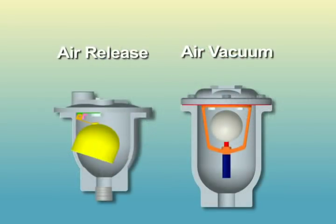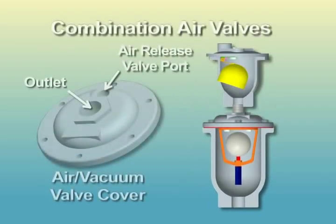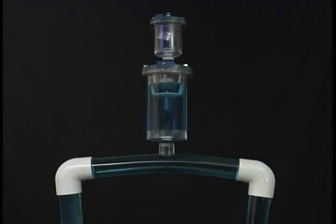Air release and air vacuum valves each perform specific functions. Combination air valves are designed to perform both. Combination air valves are the most commonly used of air release valves. They perform the functions of an air vacuum valve and air release valve. Shown here are an air vacuum valve and air release valve piped together to form a combination air valve. Notice that the air vacuum valve stays closed while the air release valve continues to function during system operation.